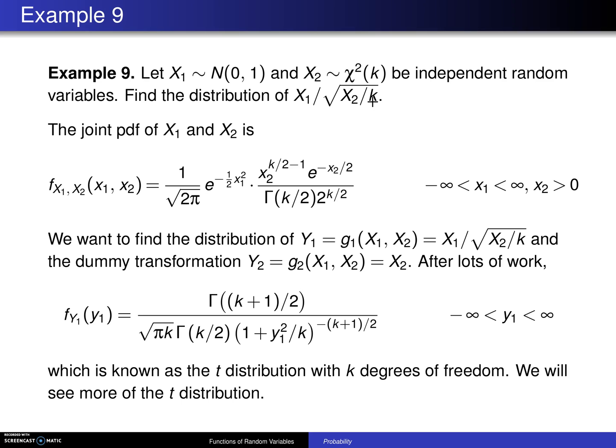Now in this particular case, you can draw a picture here. Here is the X1 axis, and here is the X2 axis, and it turns out that script A, because the normal distribution has a support that goes from minus infinity to infinity, and the chi-squared distribution has a support that goes from zero to infinity, script A is everything above the X1 axis.